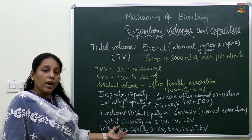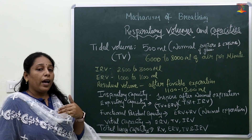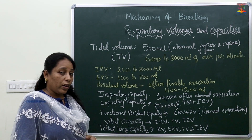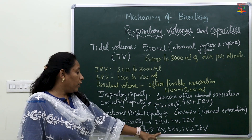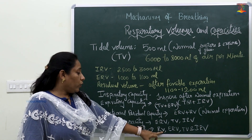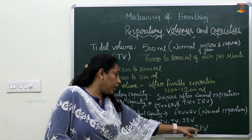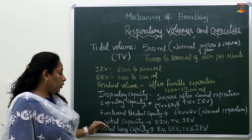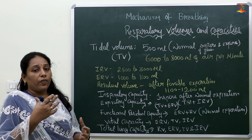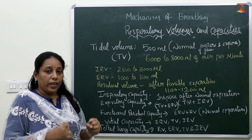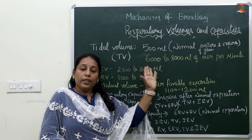Total Lung Capacity is the total amount of air present in our lungs, calculated as Residual Volume plus ERV plus TV plus IRV — all together. This represents the total amount of air present in our lungs. This concludes the topic of respiratory volumes and capacities.